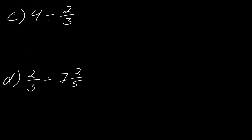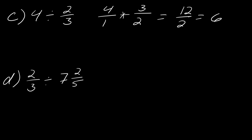I've got two more examples. Once again, I want you to convert the mixed number into an improper fraction before you do anything else. Pause the video, try these two — math is not a spectator sport, you'll remember this a lot better if you actually try it yourself. For example C: I remember that 4 can be rewritten as 4 over 1, and then I need to flip the second fraction, so this will become 3 over 2. This becomes 12 over 2, which equals 6.